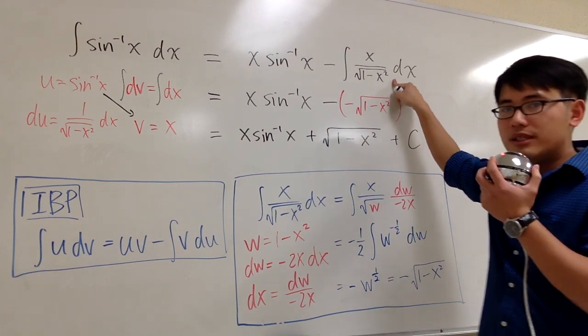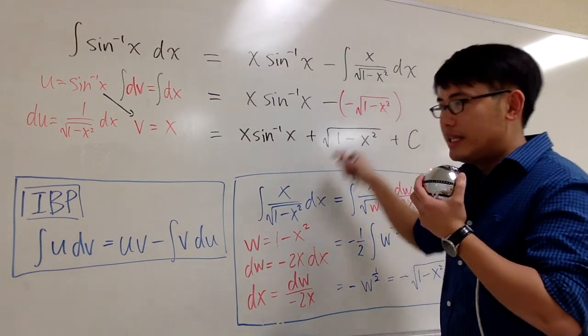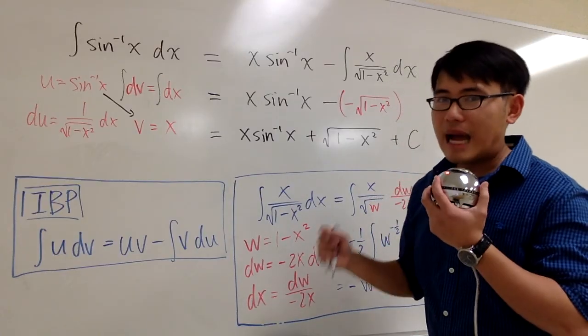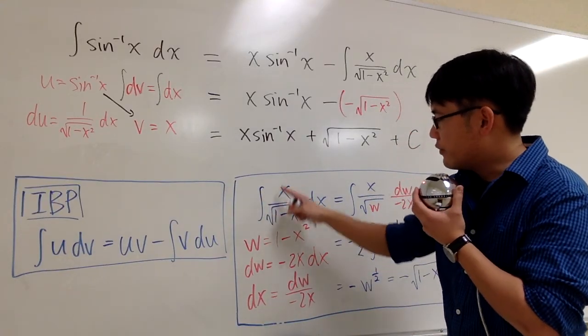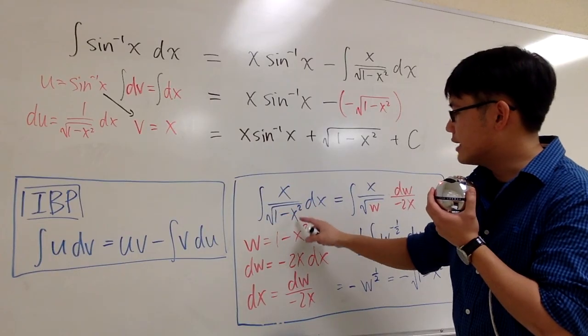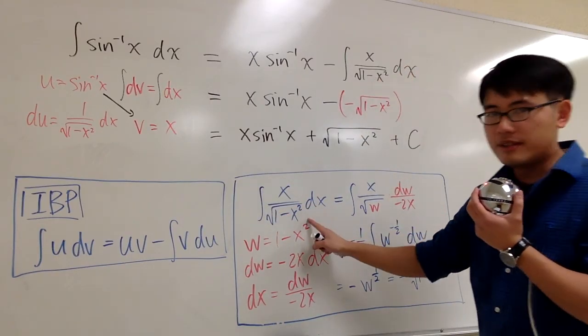We have to use a substitution for that. But then we use the u right here already. Let me use a w substitution. Let's look at it right here. The integral of x over square root of 1 minus x squared dx. We'll focus on just that integral.